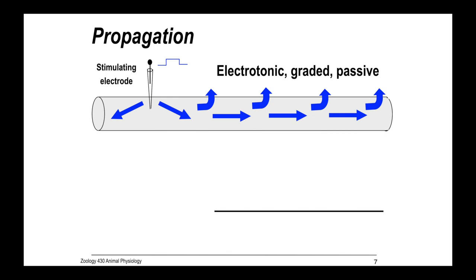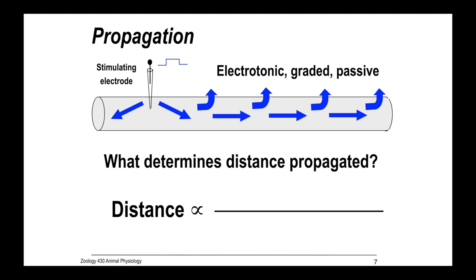With their subthreshold stimuli, they found that the traveling potential was electrotonic, graded, and passive and decayed with distance. But what determines the distance propagated for anything that flows through a tube depends on the resistance, on two kinds of resistance.